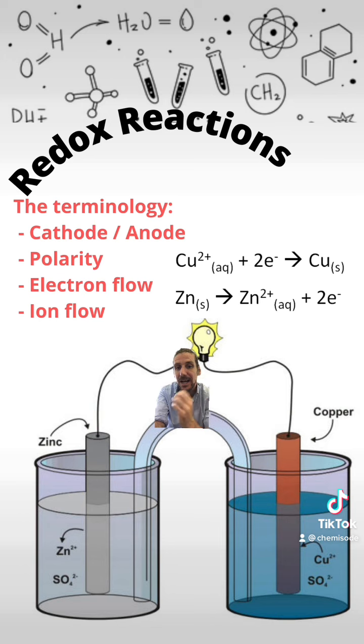Polarity is about the charge that we give these electrodes. The cathode is known as the positive electrode and the anode is known as the negative electrode. So therefore my copper is my positive cathode and my zinc is my negative anode.